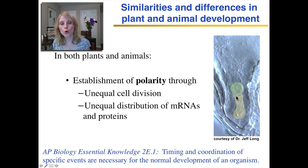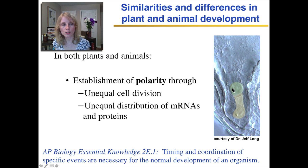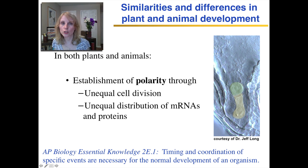Polarity also occurs through unequal distribution of messenger RNA and proteins. So for example, a certain protein might be found at a higher concentration in one cell versus another cell, and that protein will tell the cell what it should become.